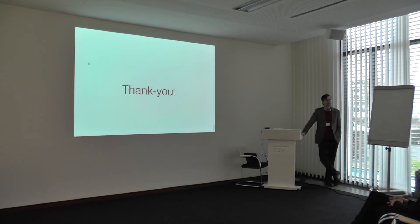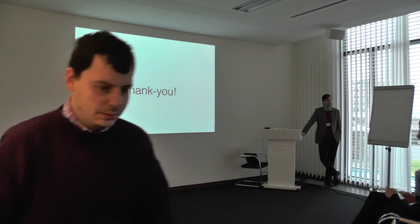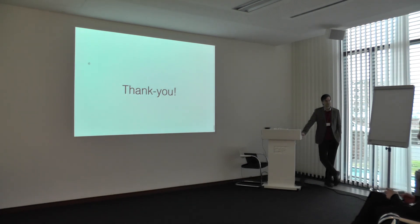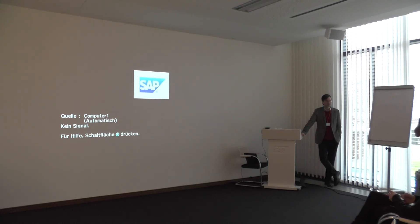An audience member asks about a partnership between ESA and SAP HANA — specifically the HANA team for spatial and graph engines. A SAP representative explains: there is a partnership with ESA related to Earth observation data, using their spatial engine to process it. They're also looking into graph topologies — for instance, extracting topologies like street networks out of satellite images, which can then be used for routing and similar applications. That's why graph and spatial fit very well together, and why they're working with ESA.